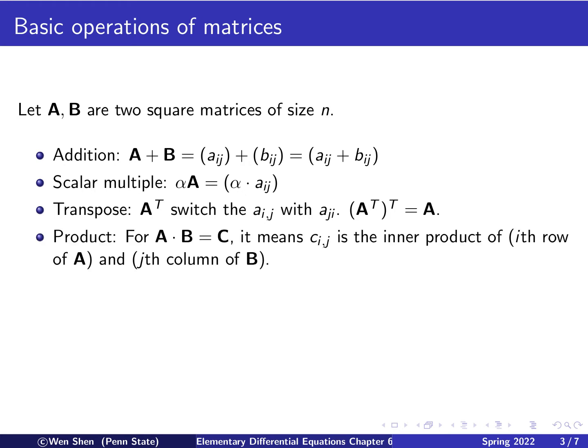The next one is the product of two matrices. Let's say A times B would equal to a matrix, let's call it C, and the element is c_ij. Then the element c_ij is the inner product of the i-th row vector of A with the j-th column of B.